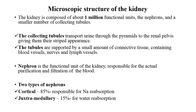Microscopic structure of the kidney: the kidney has almost one million functional units — nephrons. The collecting tubules transport the urine through the pyramids to the renal pelvis, giving them their striped appearance. The tubules are supported by a small amount of connective tissue, blood vessels, and lymphatics. This is the arrangement of major and minor calyces when seen microscopically.